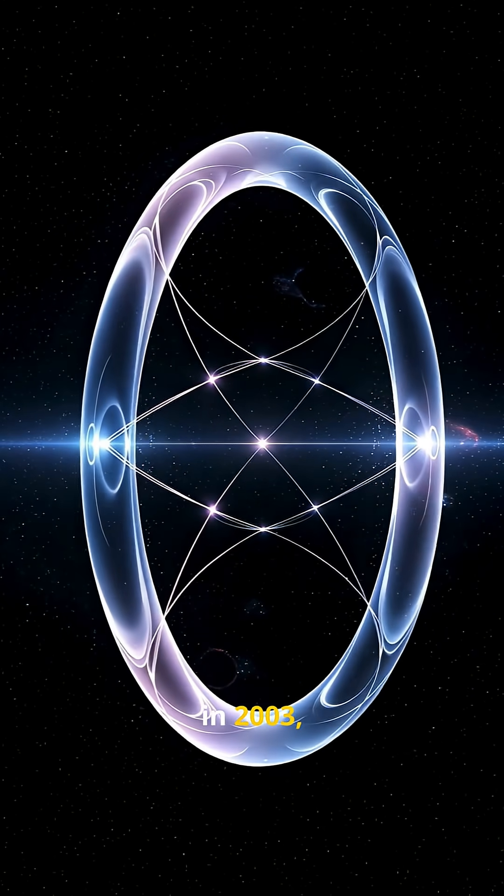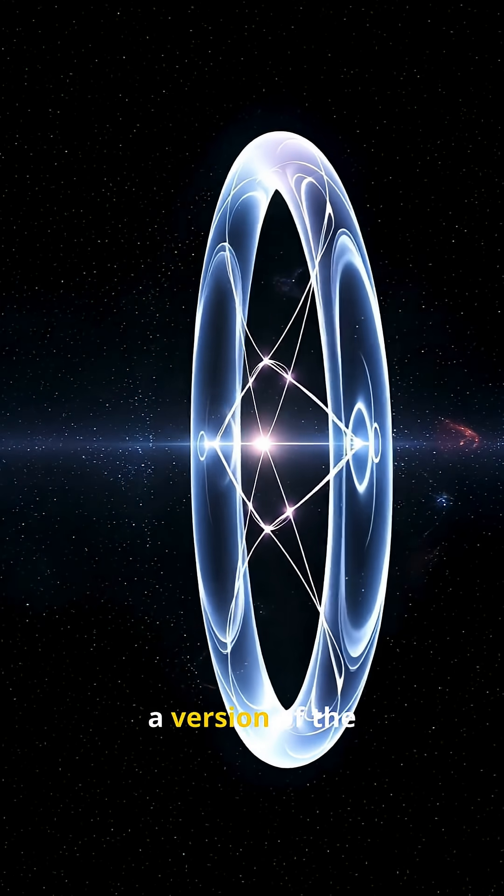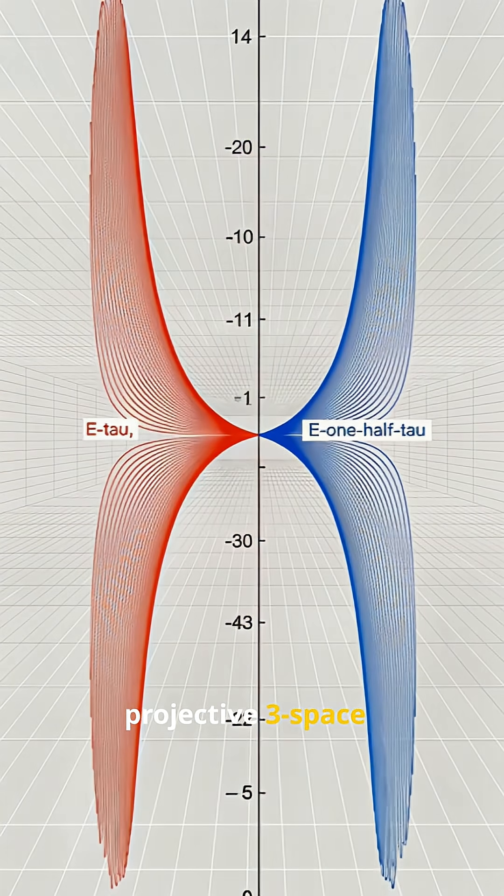Alternatively, in 2003, Paul Seidel proved a version of the conjecture for the quartic surface in projective 3-space.